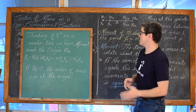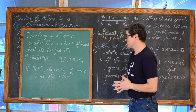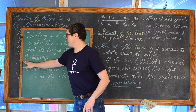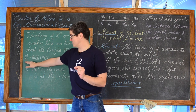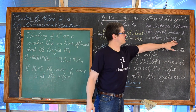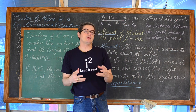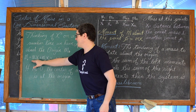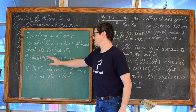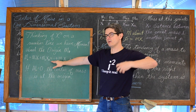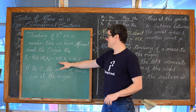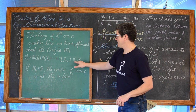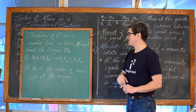Thinking of our x's on the number line, we have a moment about the origin — m sub 0 — which is calculated as m sub 1 times x sub 1 plus m sub 2 times x sub 2, and so on, up to m sub n minus 1 times x sub n minus 1 plus m sub n times x sub n.